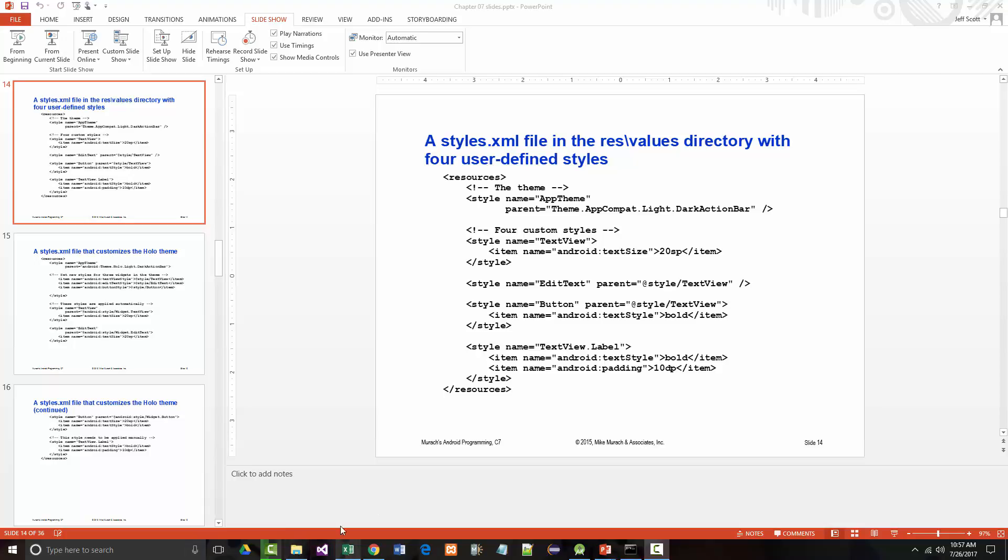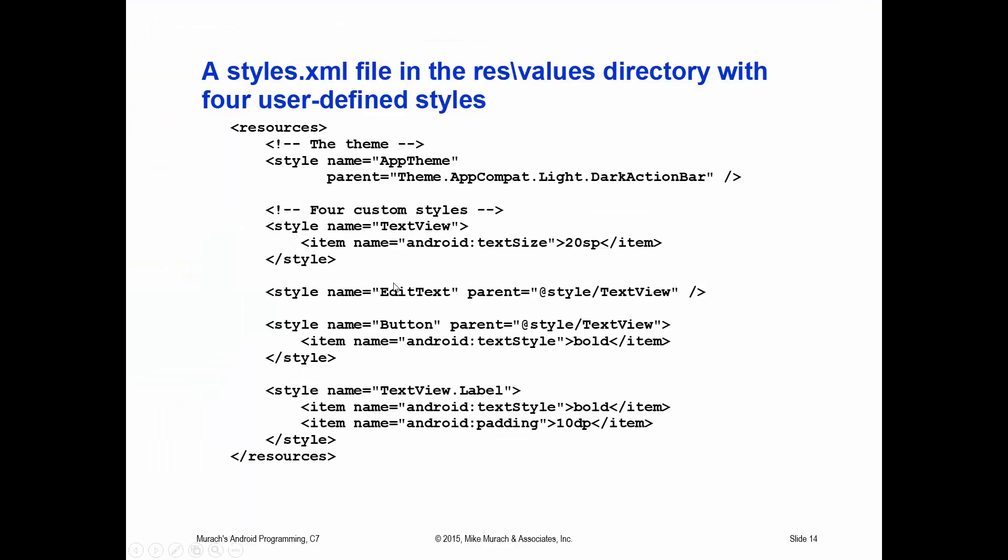I'm on page 210 of the text. Now that you know how to work with styles, you're ready to take another look at themes — specifically, how to modify a theme. Figure 7-7 on page 211, also shown on the slide here, shows how to modify a theme such as the Holo theme. The theme named AppTheme at the top is a custom theme that contains three item elements. Each of these item elements uses its name attribute to specify an attribute that corresponds with a style from the inherited theme, the Holo.Light.DarkActionBar theme.